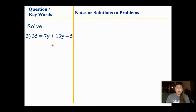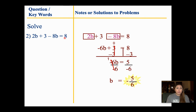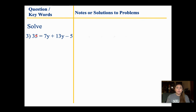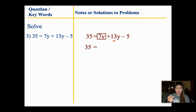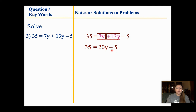For question 3, this might look a little different, but we solve it the same way — it doesn't matter that the number is on the left side now. I don't do anything to the 35 yet because I have to deal with the right side first. Do I have any distribution? No. Do I have any like terms? I have 7y and 13y. Both are positive, so I can add them: 7 plus 13 gives me 20y. Nothing happened to the negative 5, so I bring it down. The 35 matches the negative 5, so we add 5 to both sides. 35 plus 5 gives me 40 equals 20y.